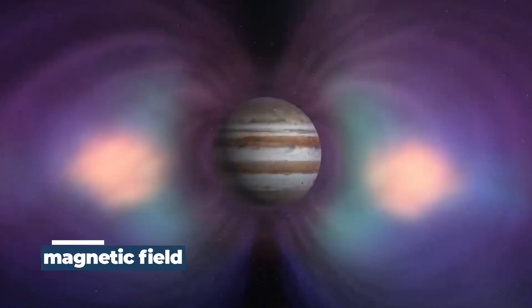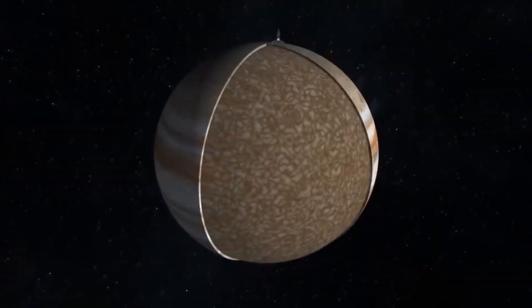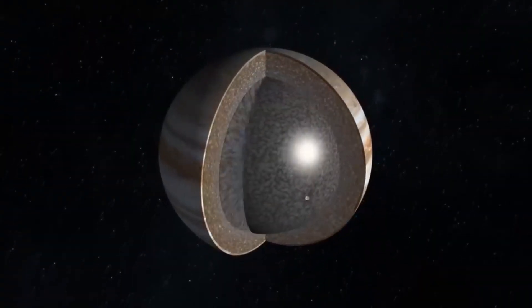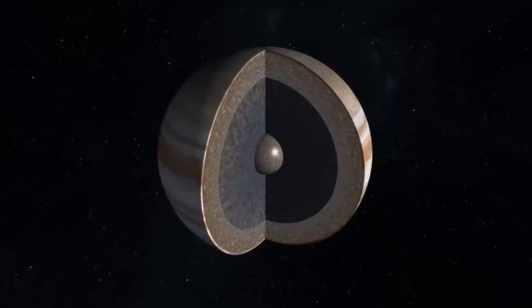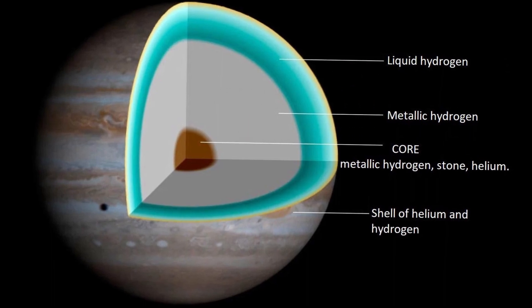As a result of this process, the planet develops a powerful magnetic field that is amplified by Jupiter's fast rotation. However, the composition of Jupiter's core is unknown. Nobody knows how deep the liquid hydrogen layer goes or whether the core contains heavier components.